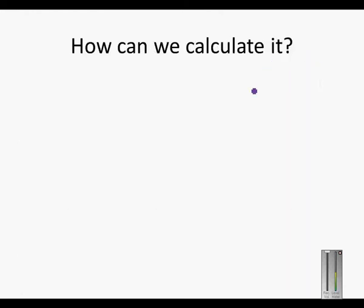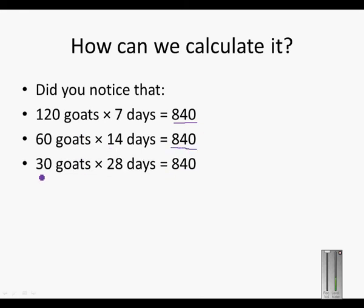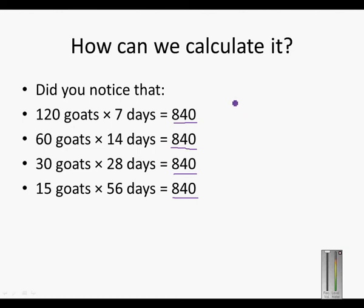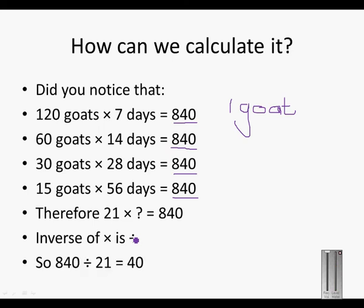But how can we calculate that 40 goats that the farmer can keep? Notice that 120 times 7 gives us 840. 60 times 14 gives us 840. 30 times 28 gives us 840. 15 times 56 gives us 840. It means the farmer has enough feed for 840 goat-days. So 840 divided by 21 gives us 40 goats.